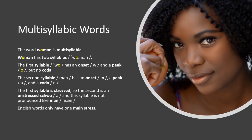The word 'woman' is multisyllabic — it has two syllables: W-man. The first syllable, W, has an onset W and a peak U, but no coda. The second syllable, Mun, has an onset M, a peak U, and a coda N. The first syllable is stressed, so the second is an unstressed schwa, and this syllable is not pronounced like 'man'. English words only have one main stress.